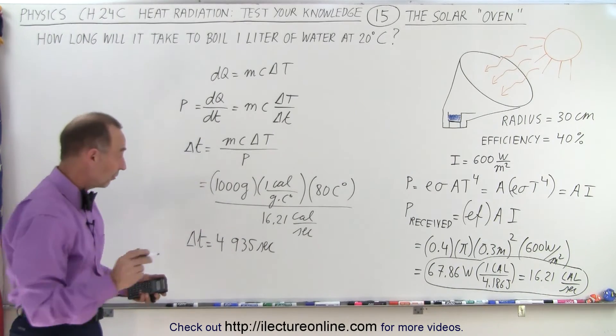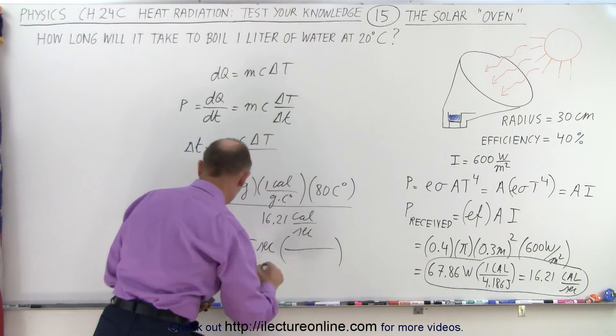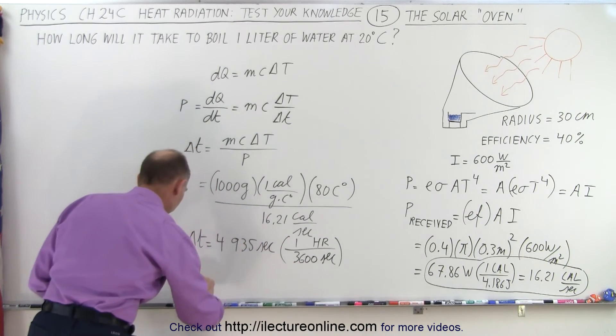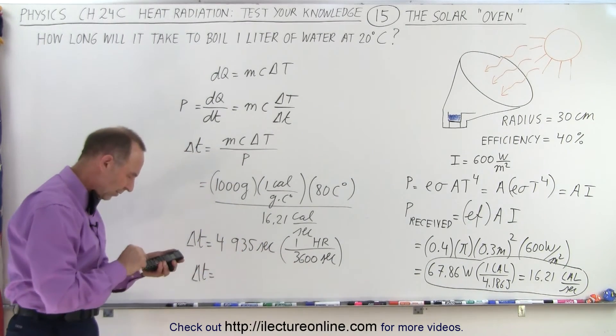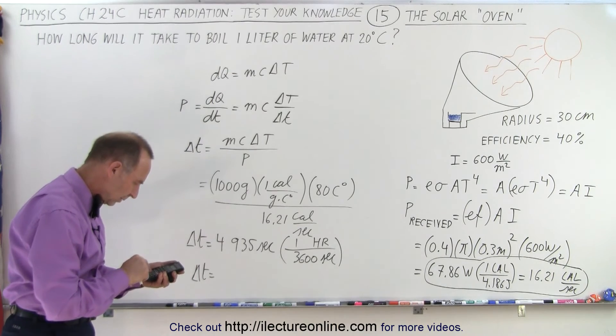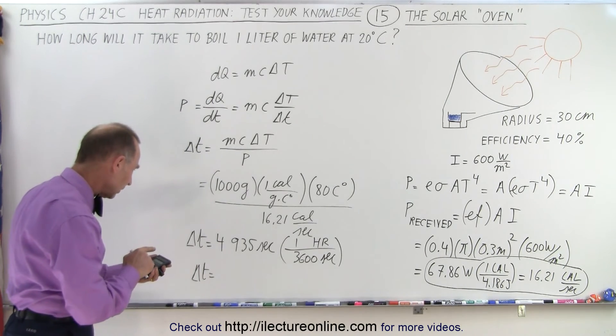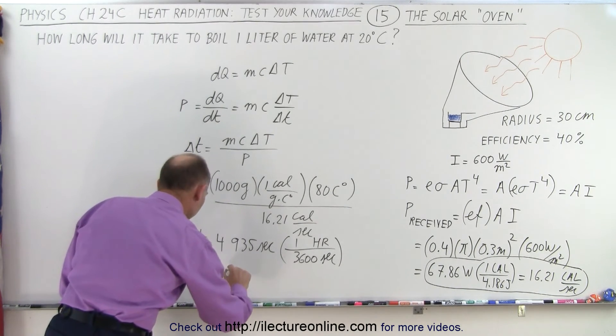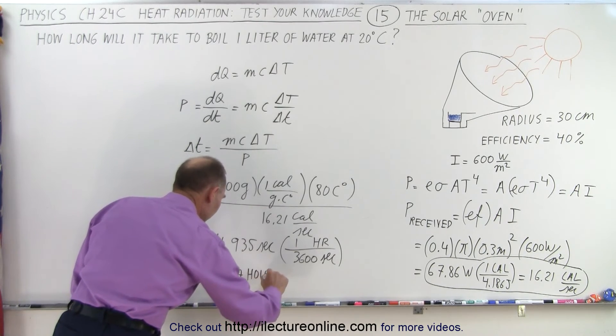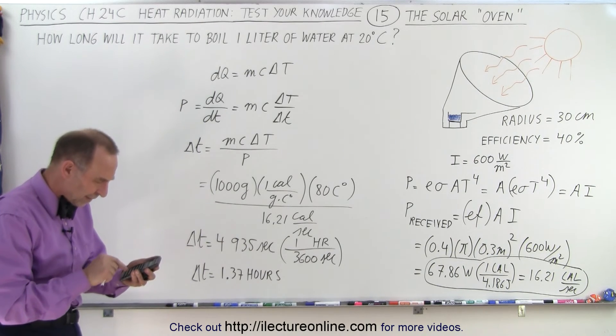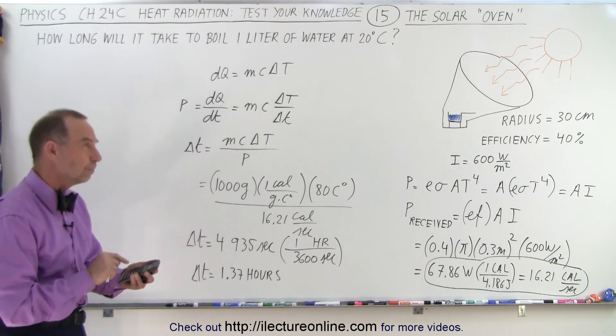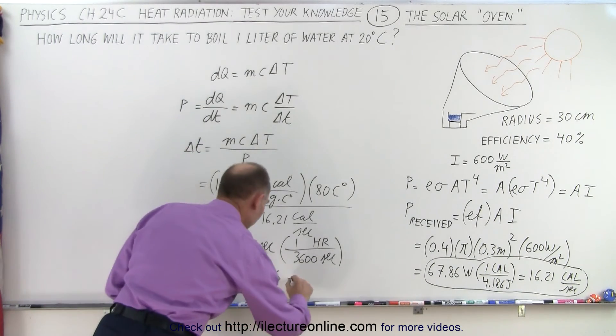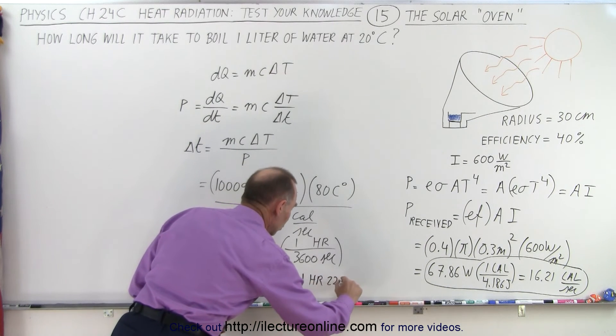Let's convert that to hours. So let's see here, 1 hour is 3,600 seconds. So the delta t is equal to, divide that by 3,600, and we get 1.37 hours. And 0.37 hours, let's take 0.37 times 60, and that's 22. So that's about equal to 1 hour and 22 minutes.